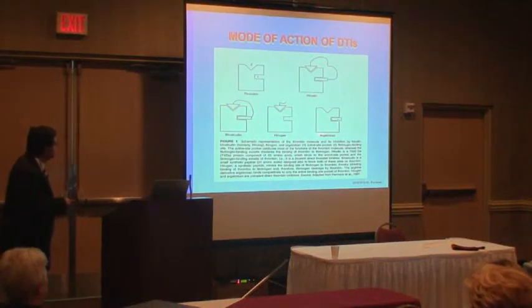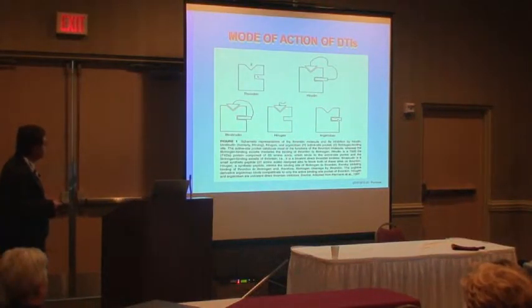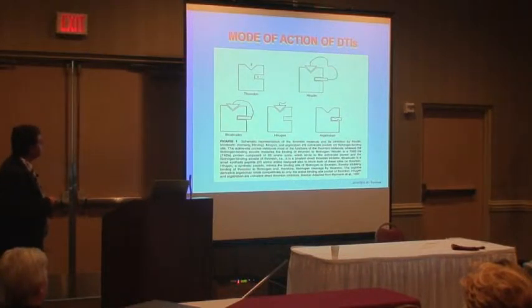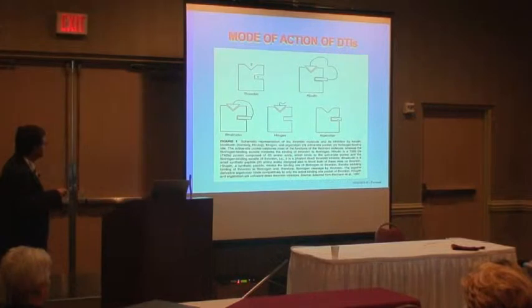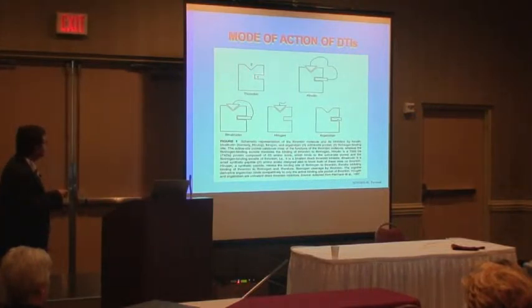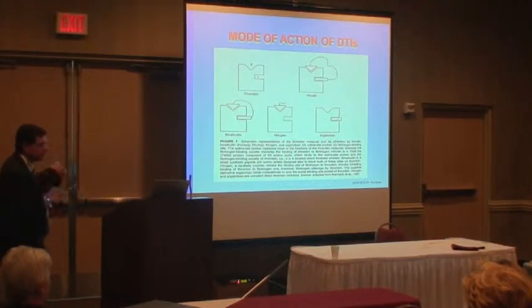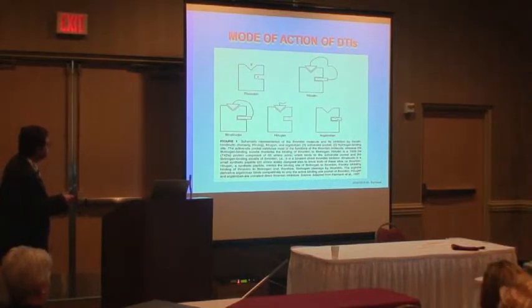In this slide, summarize the mode of action of the different direct thrombin inhibitors. Here is thrombin with the catalytic site and the fibrinogen binding site. Hirudin binds to both sites and then has a very efficient neutralization of thrombin activity.